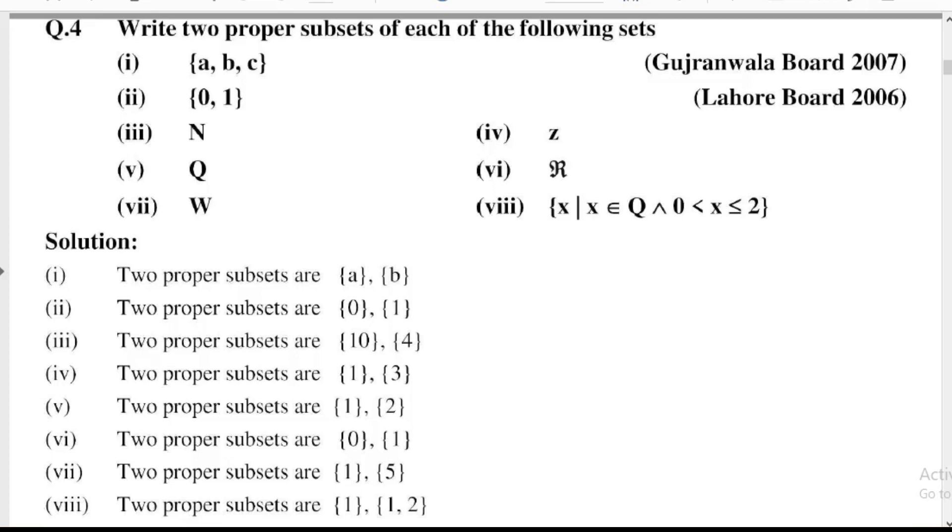Part 6: R, where R means real numbers. Two proper subsets are {1}, {3}.